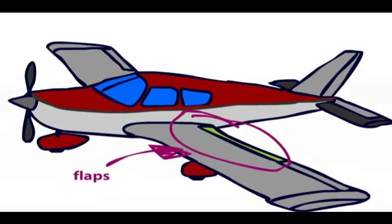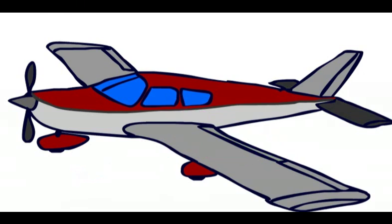In addition, the flaps, shown here on the wing, are used to help create extra lift and slow us down when we are coming in for landing, which is always helpful.